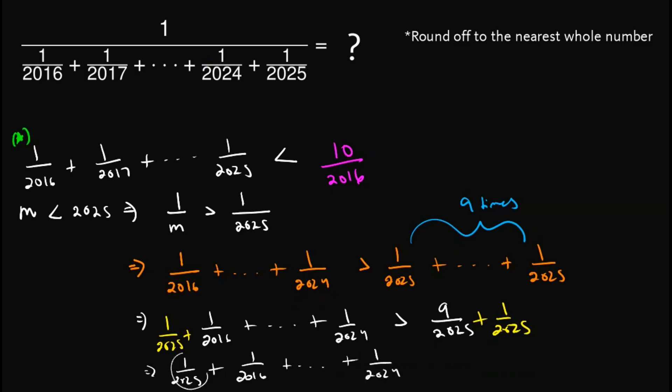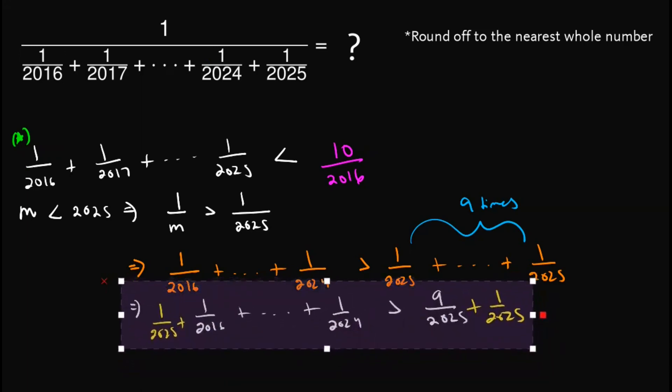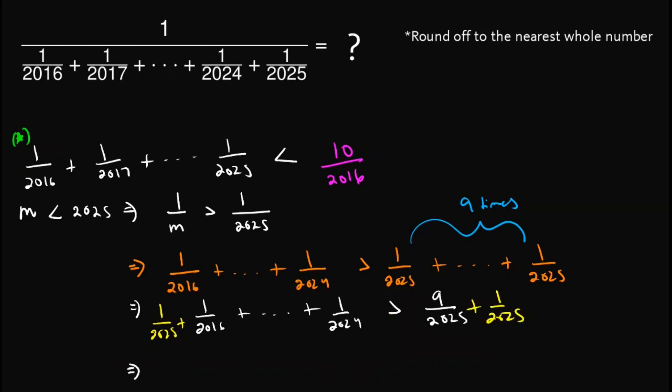And this would give us 1 over 2025 plus 1 over 2016 up until 1 over 2024 plus 1 over 2025 is greater than 10 over 2025. So we take note of this inequality. And actually, we can incorporate this one into this inequality.